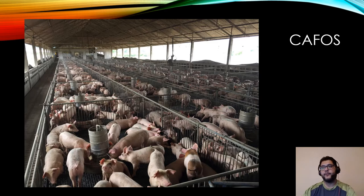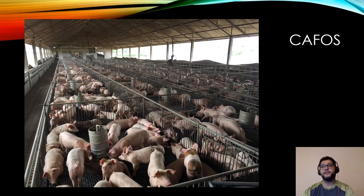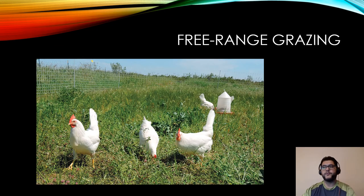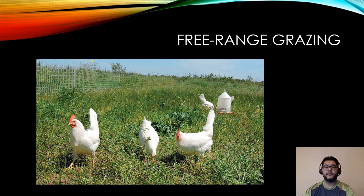This is an example of a CAFO. One of the things to notice is that the animals are stuck in very small pens — they don't have a lot of space and they're meant to be fed instead of having to graze. That's going to come up as an issue on the AP exam. Whereas with free-range grazing, here we have some chickens who are allowed to graze for bugs, seeds, whatever they're looking for to eat. There's a clear difference in how they eat, which leads to a difference in quality of life as well as the quality of meat you get.